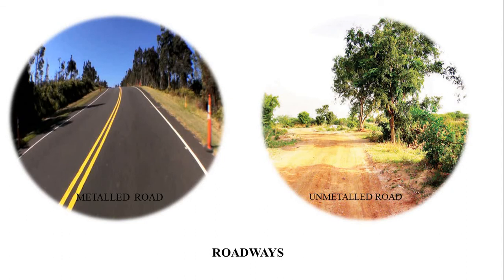We will discuss about roadways. The most commonly used means of transport, especially for short distances, are roads. They can be metalled or unmetalled. Several types of materials like charcoal, rubber, cement, or a mixture of these are used for construction of metal roads. There are several national and state highways in India. The latest development in India is the construction of expressways — for example, the Yamuna Expressway.